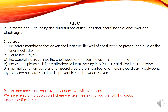The last structure is the pleura. It is a membrane surrounding the outer surface of the lung and the inner surface of the chest wall and diaphragm. It is a serous membrane that covers the lung and the wall of the chest cavity, protecting and cushioning the lungs. The pleura has two layers: parietal and visceral. The parietal layer lines the chest cage and covers the upper surface of the diaphragm. The visceral layer is firmly attached to the lungs, passing into fissures that divide the lungs into lobes. In normal conditions, the parietal and visceral pleura are in contact, and there is a pleural cavity between the two layers. This space has serous fluid, which prevents friction between the two layers.